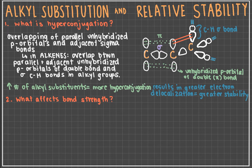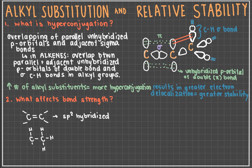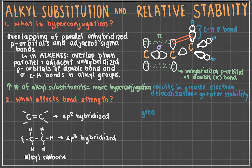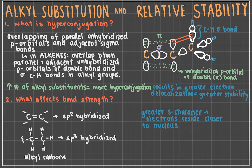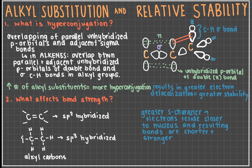The second factor that alkyl substituents bring into play is bond strength. The carbons of the alkene double bond are sp2 hybridized, while carbons within alkyl groups are sp3 hybridized. Without getting into the major specifics, greater s-character in hybridized orbitals means that the electrons are able to reside closer to the nucleus. As a result, the bonds formed by orbitals with greater s-character are shorter. Therefore, a sigma bond between an sp2 hybridized carbon and an sp3 hybridized carbon would be stronger than an sp3-sp3 bond due to sp2 hybridized orbitals having greater s-character, and thus the molecule would be more stable.